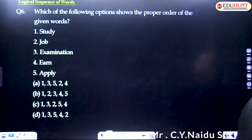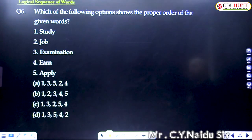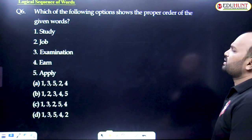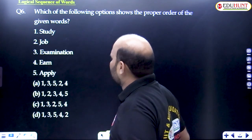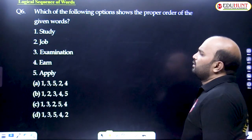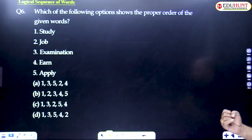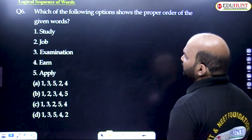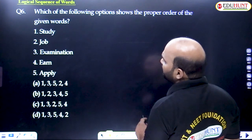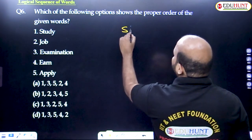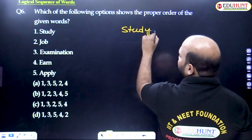Let's go to question number six: which of the following options shows the proper order of the following words? I am given the words: first one study, second one job, third one examination, fourth one earn, and fifth one apply. So in that question we use the expression law, first one take up study.